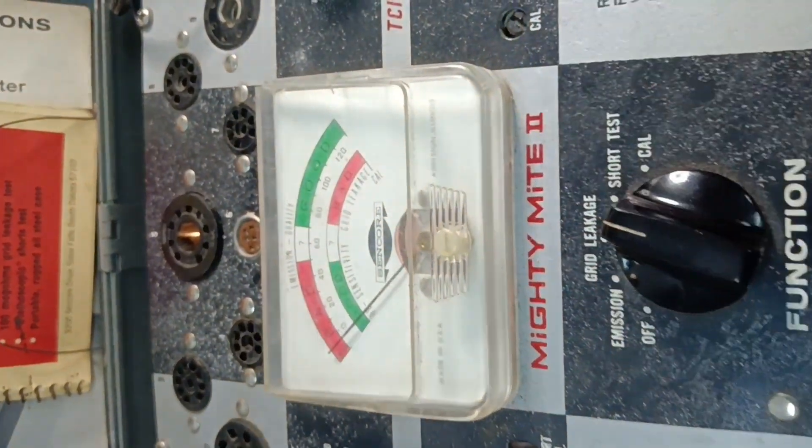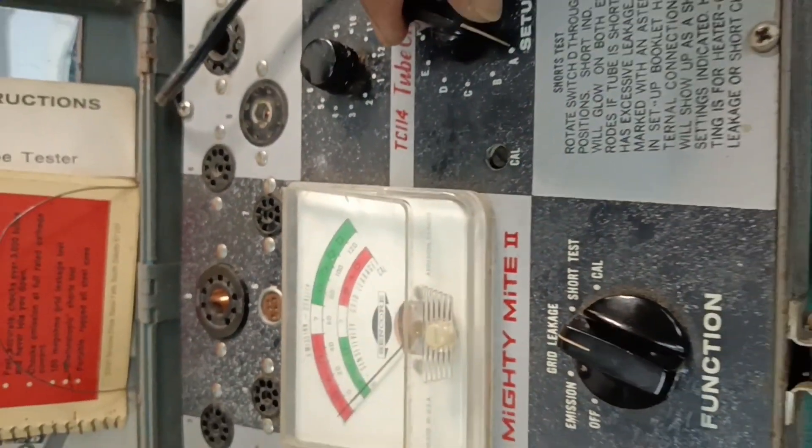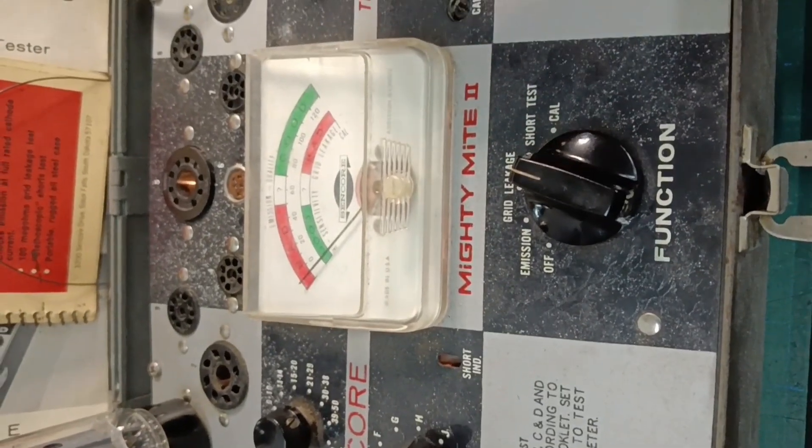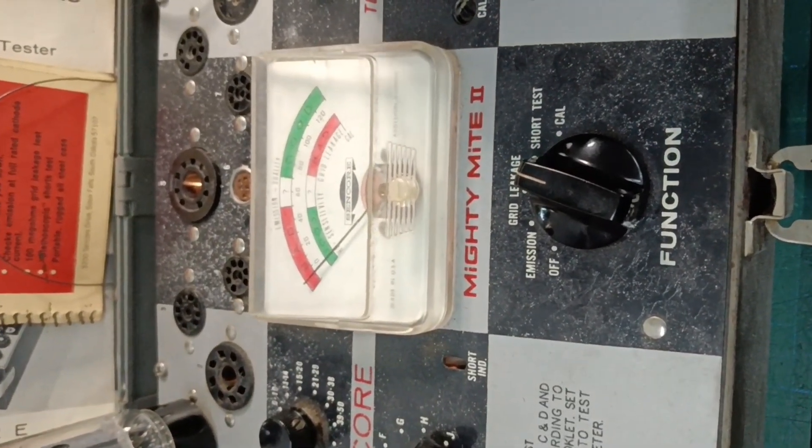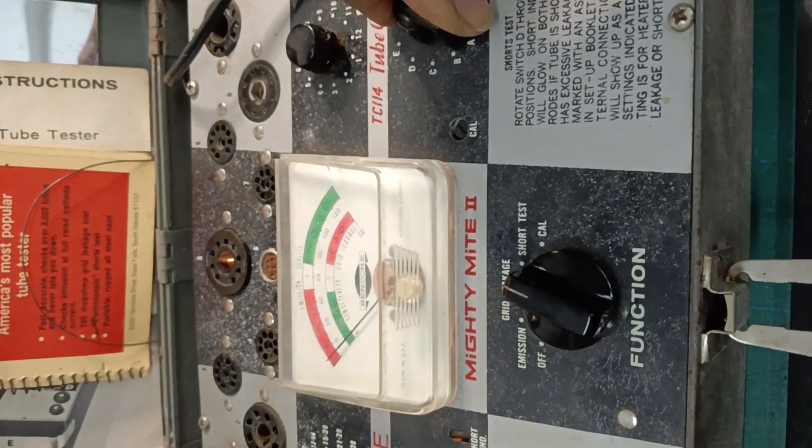Finally, we test for short circuit. We select short on the function knob and then rotate the setup knob through all the settings. Watch the neon indicator. If the neon indicator lights up, there is a short. If it blinks once while turning the selector, it's not an issue.